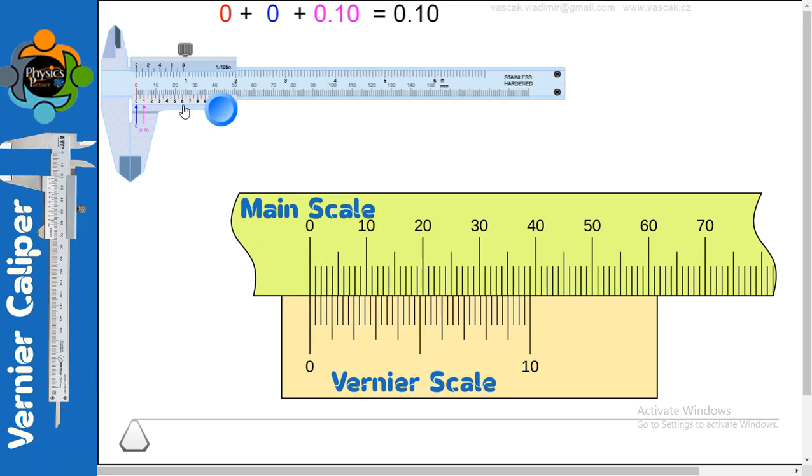The scale slides parallel to main scale. That enables reading to be made. For example, if you can move it like this, you can see the scale which is sliding parallel to the main scale and enables reading to be made in the fraction of division on the main scale.